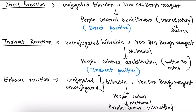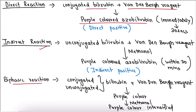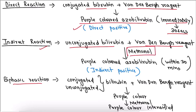There are three reactions in the Van den Bergh reaction. The first is the direct reaction: when conjugated bilirubin reacts with Van den Bergh reagent, it forms purple-colored azo-bilirubin immediately, within 30 seconds — so the result is direct positive. The second is the indirect reaction: unconjugated bilirubin reacts with Van den Bergh reagent in the presence of methanol, forming purple-colored azo-bilirubin within 30 minutes. Because unconjugated bilirubin is insoluble in water, methanol makes it soluble — so the result is indirect positive.